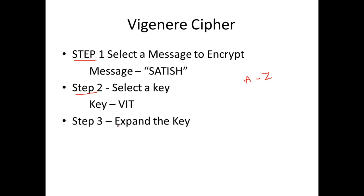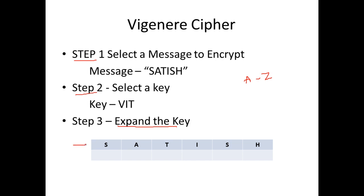Step 3: we need to expand the key such that it matches the length of the message. I have the plaintext message here and my key is VIT, which covers only three characters. The remaining boxes are empty. To fill them, you just repeat the key — so VIT gets repeated such that the length of the key matches the length of the plaintext.